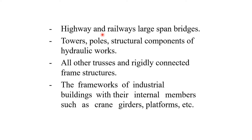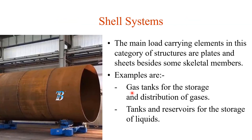Further examples of the framework or skeletal system include highway and railway large-span bridges, towers, all structural components of hydraulic works, truss members and rigidly connected frame structures. In a truss we have tension members and compression members — all line elements. The framework of industrial buildings with internal members such as crane girders and platforms also belongs to this category. Overhead cranes used for lifting heavy elements, whose girders are made of steel, are also a type of framework or skeletal system.